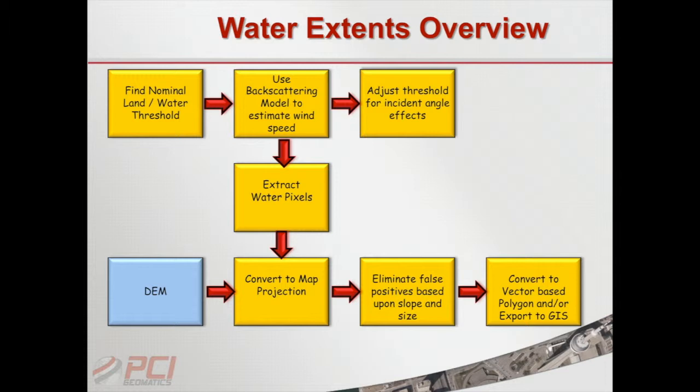Once we have some idea of what the wind speed and wind direction is — and radar data is acquired at a broad range of incidence angles — we want to make those adjustments. So we've done the modeling, done some statistical processing, trying to do best fits and maximum likelihood. We've got an idea now of what constitutes a water pixel.